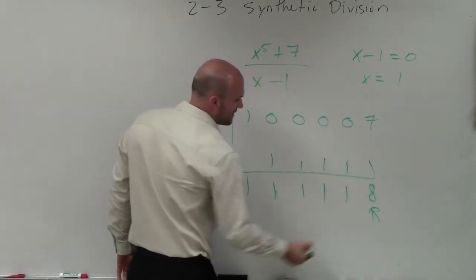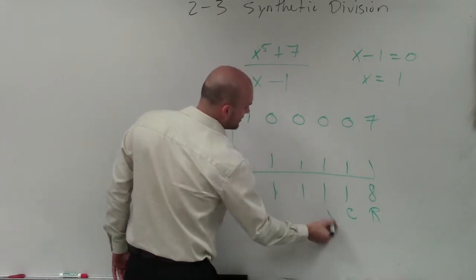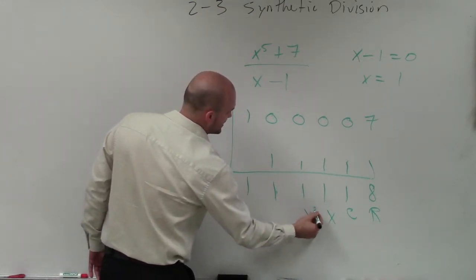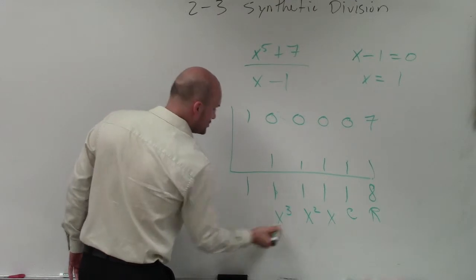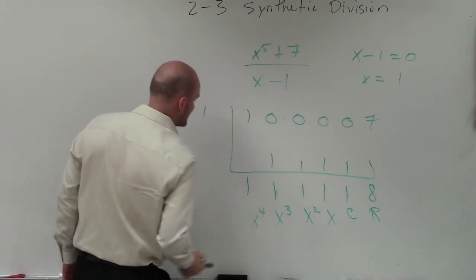Therefore, we have a remainder of eight, a constant of one, a coefficient of x of one, a coefficient of x squared is one, a coefficient of x cubed is one, and a coefficient of x to the fourth is one.